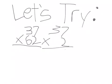7 times 2 is 14. Carry the 1. 3 times 2 is 6. Plus 1 is 7. And that gives us 74. Now we're going to do 37 times 60.